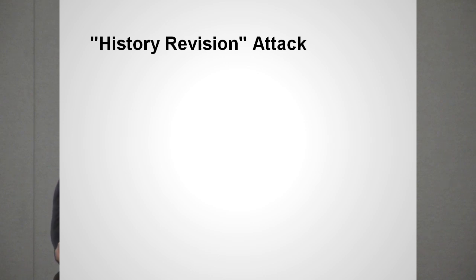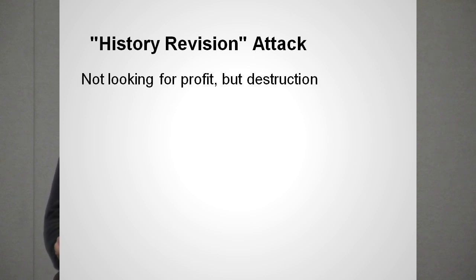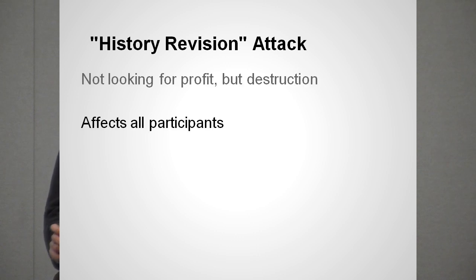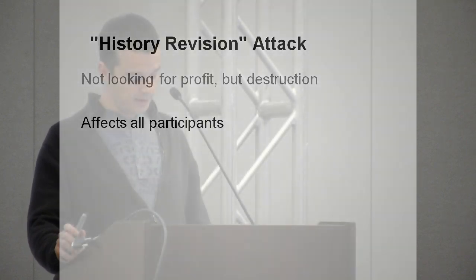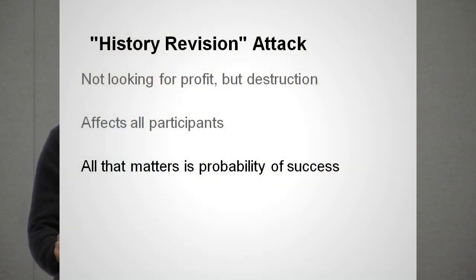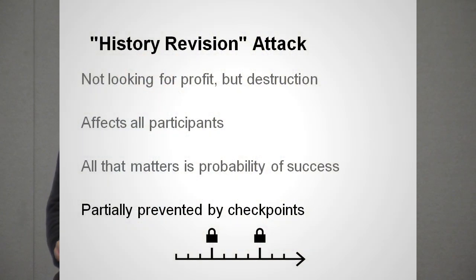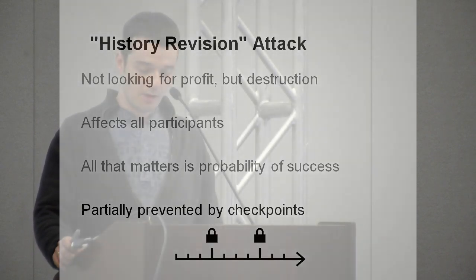But what if the attacker is not seeking profit, but rather destroying confidence in Bitcoin? Such an attack would affect all participants and be easier to perform in terms of coordination. The attacker doesn't even bother with extracting value from the system — all that matters is to succeed in rewriting the chain of transactions. The consequences can be severe. Imagine what will happen if suddenly a week's worth of transactions is just replaced. This is currently partially prevented by hard-coded checkpoints in the official Bitcoin implementation, but it's a centralized solution which is subject to other types of attacks. Also, the latest checkpoint is usually some thousands of blocks behind.